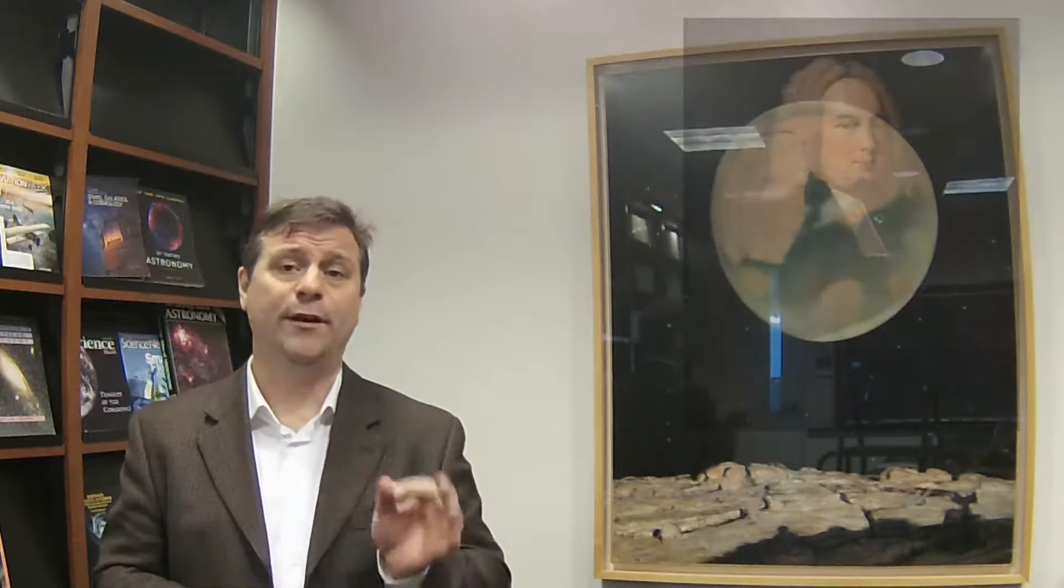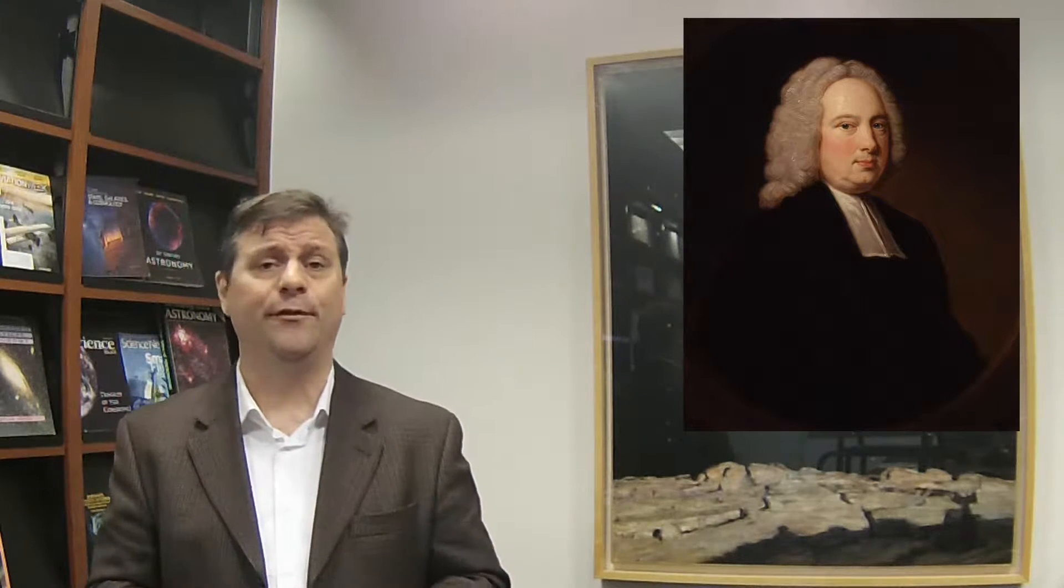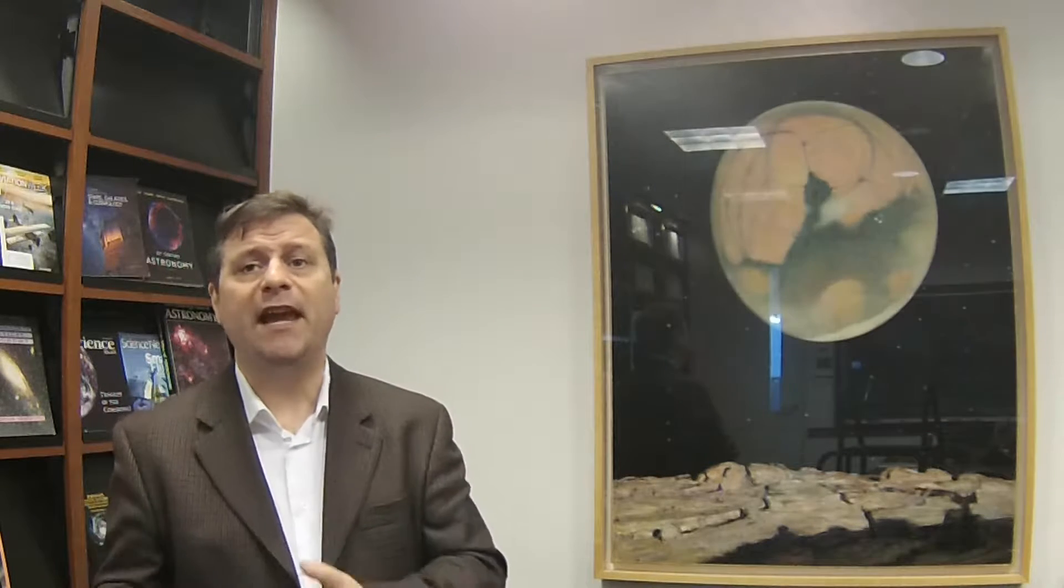And in 1725, James Bradley set up a special telescope that was basically inside a big chimney. And he hunted for the parallax of Gamma Draconis. Because he was also in London, he wanted to make sure he could actually do this. And he also looked at other stars that passed through his telescope because it was a fixed point telescope. And he found another star, 35 Camelopardalis, which is another star that passed through the field of view. He did not find the parallax. However, he found something else that was even stranger.